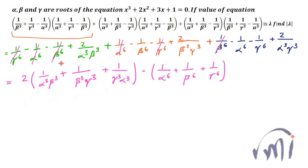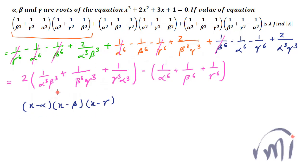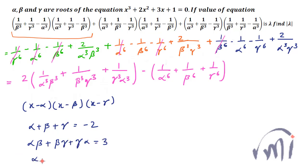So we have to find the value of this expression. Coming back to the original equation whose roots are alpha, beta and gamma: comparing coefficients of (x−α)(x−β)(x−γ) with x³+2x²+3x+1=0, we get α+β+γ = −2, αβ+βγ+γα = 3, and αβγ = −1.